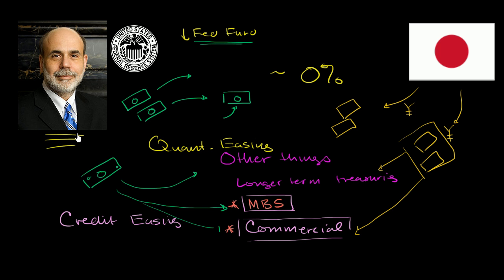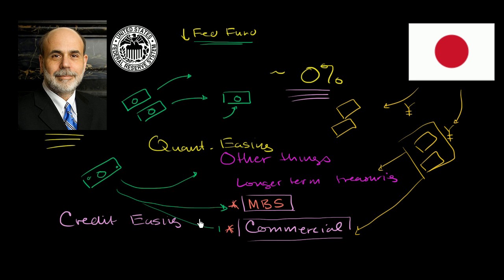What Bernanke is doing mechanically is not that different from what the Japanese did. He started off trying to lower short-term interest rates by buying short-term securities, which increased reserves in circulation, lowered the overnight borrowing rate, and lowered the federal funds rate. But when that went to 0% — hitting the same floor Japan hit — Bernanke asked: how do I solve the logjam in the credit markets? Just like Japan, he said he would start printing more money and use it to buy assets that the Fed does not traditionally buy.